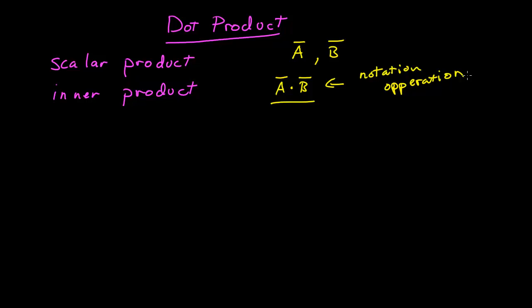So what does this give us? It gives us, in fact, a number — which is why it's often called a scalar product. It gives us a scalar as a result, and that scalar can be calculated a number of different ways.